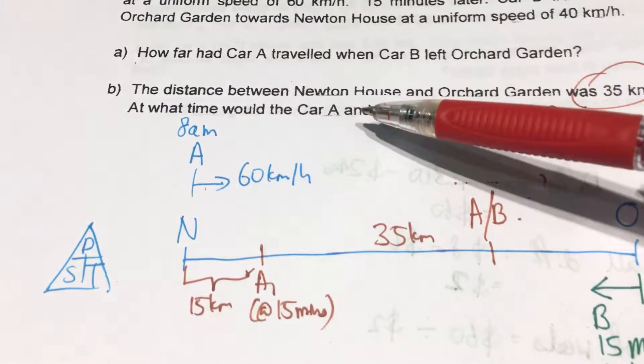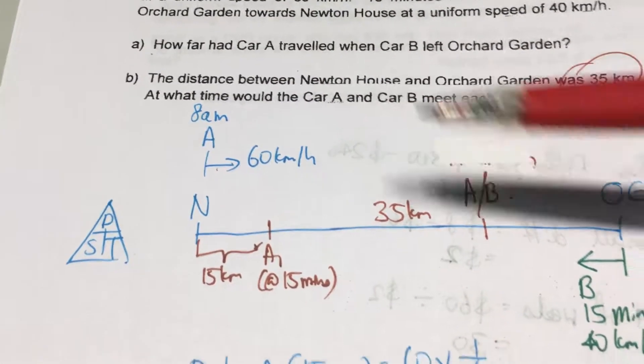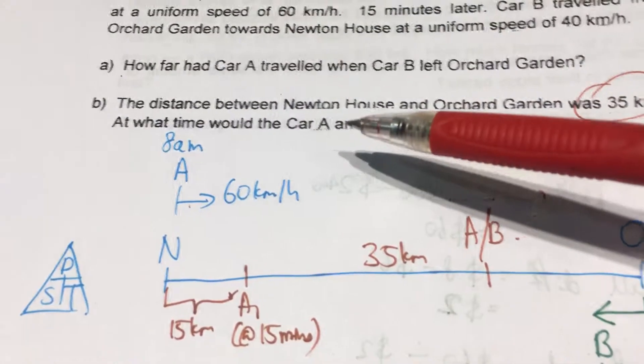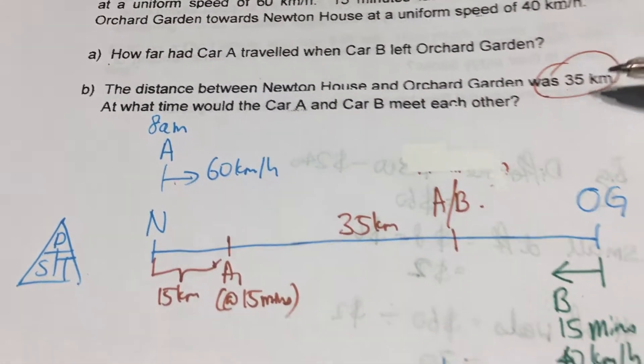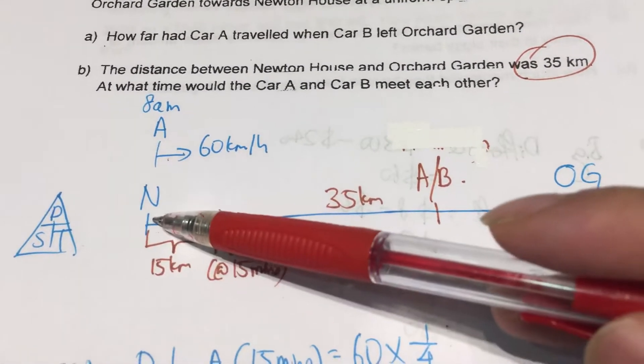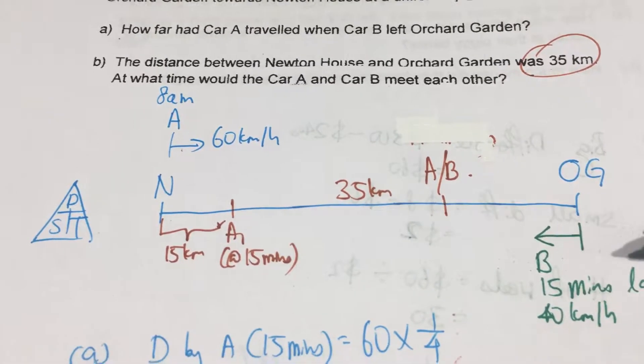So now, the tricky part will be in part B because it takes some understanding. The distance between Newton House and OG was 35km. So from here to here is 35km.